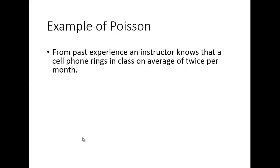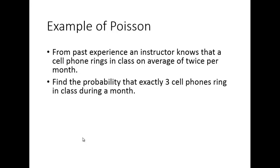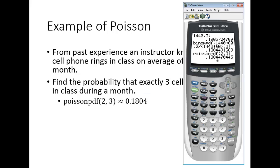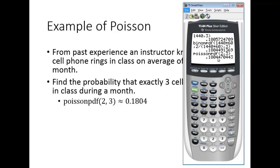Example: from past experience, a cell phone rings in class an average of two times per month. Find the probability that exactly three cell phones ring during a month. Since lambda is 2 per month and we're asking about one month, the units match. Using Poisson PDF with lambda=2 and k=3 gives approximately 0.1804.